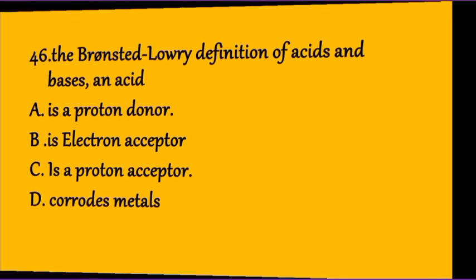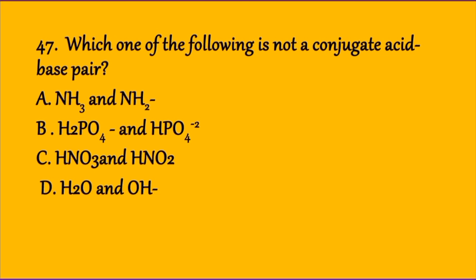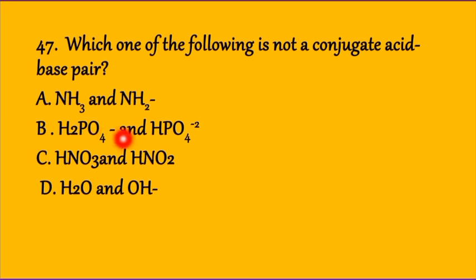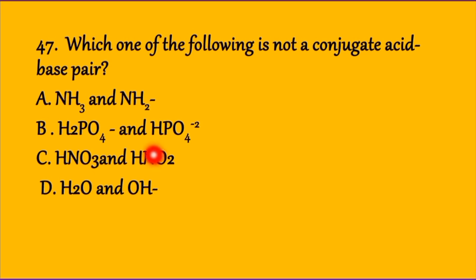Question 47 is about conjugate acid-base pairs. Ammonia is a conjugate acid of the base amide NH₂⁻. Dihydrogen phosphate is a conjugate acid of biphosphate. Nitric acid and nitrous acid are not conjugate pairs because they differ by more than a proton. Nitric acid and oxygen are not conjugated as a base pair. The answer is C.